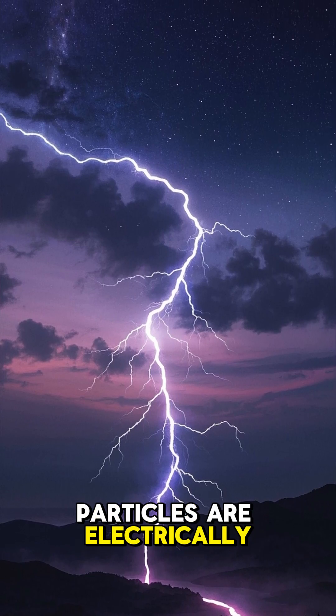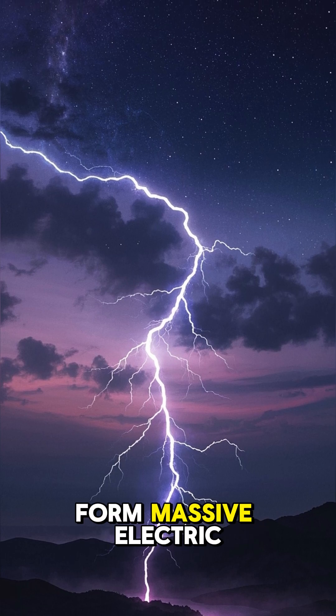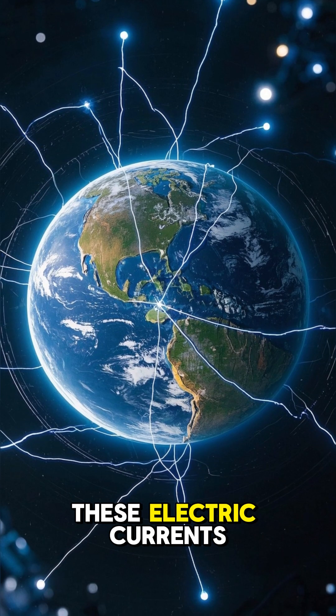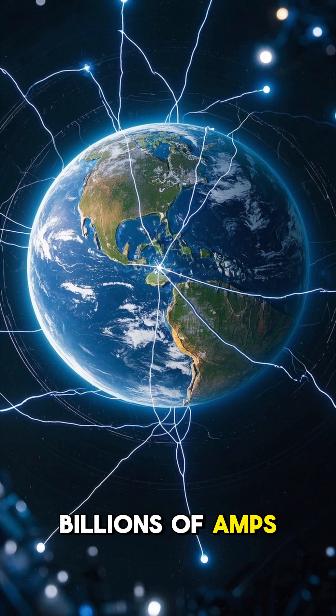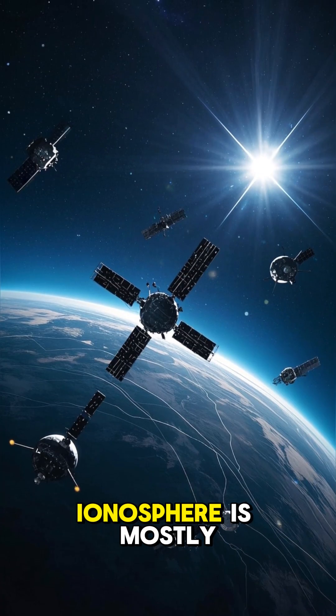And since these particles are electrically charged, they're able to form massive electric currents. These electric currents can be thousands of miles wide and carry billions of amps of current. And although the ionosphere is mostly harmless,